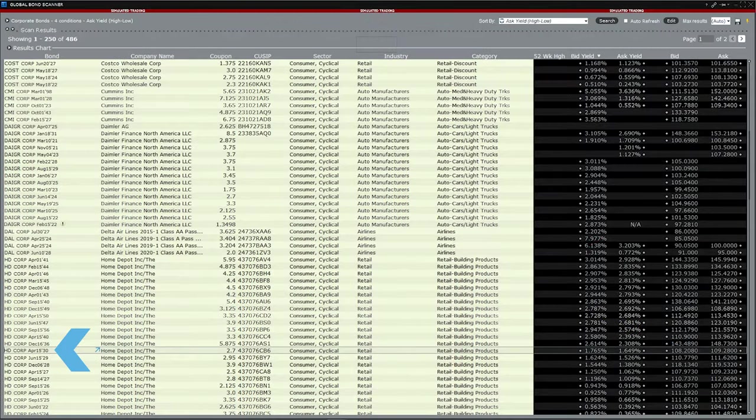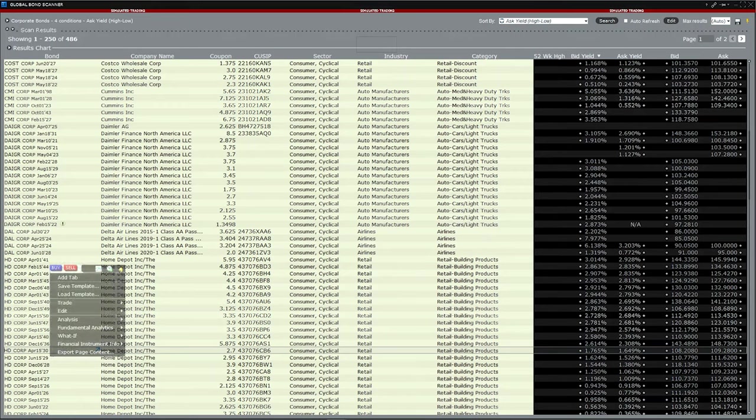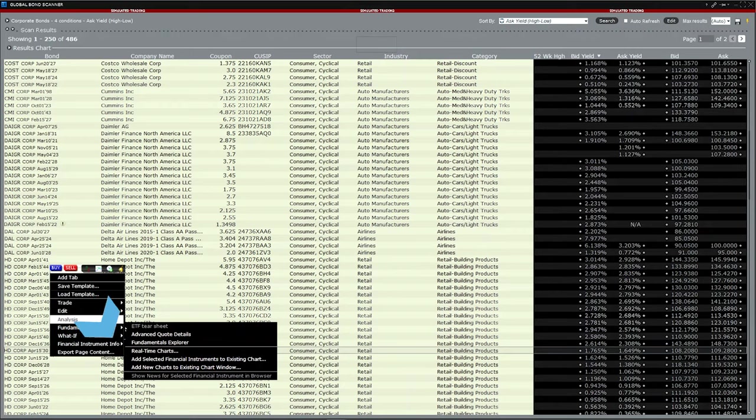To do this, right-click on the Home Depot bond entry, then select Analysis from the submenu, then Real-Time Charts from the next pop-up box.